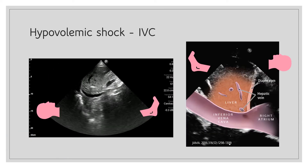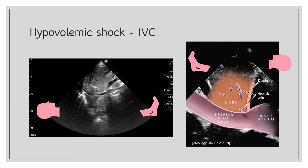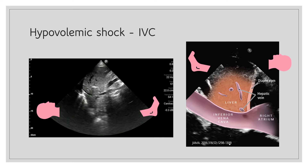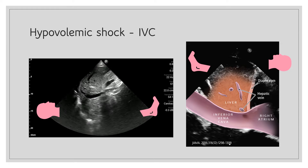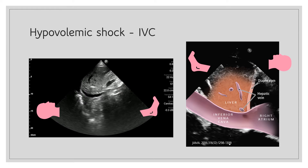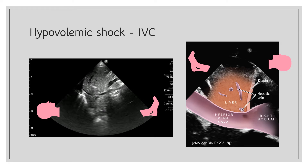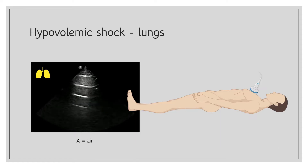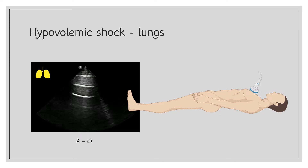Looking at the inferior vena cava of this patient with hypovolemia, it is very small and almost completely collapsible with inspiration. That is suggestive of low right atrial pressure, typically less than 3 mmHg. The lung ultrasound typically shows A-lines, suggestive of a normally aerated lung.